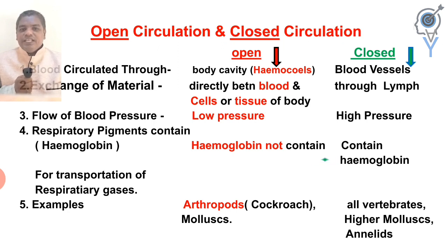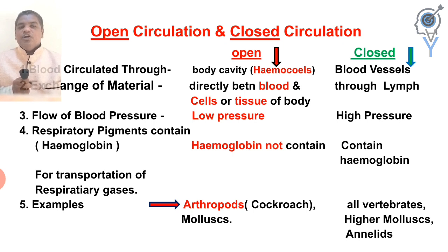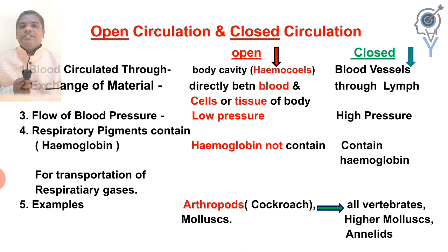In closed circulation, hemoglobin is present and respiratory gases are transported via hemoglobin. The example of open circulatory system is lower invertebrates. All vertebrates are the example of closed circulatory system. Higher mollusks and annelids are also examples of closed circulatory system.